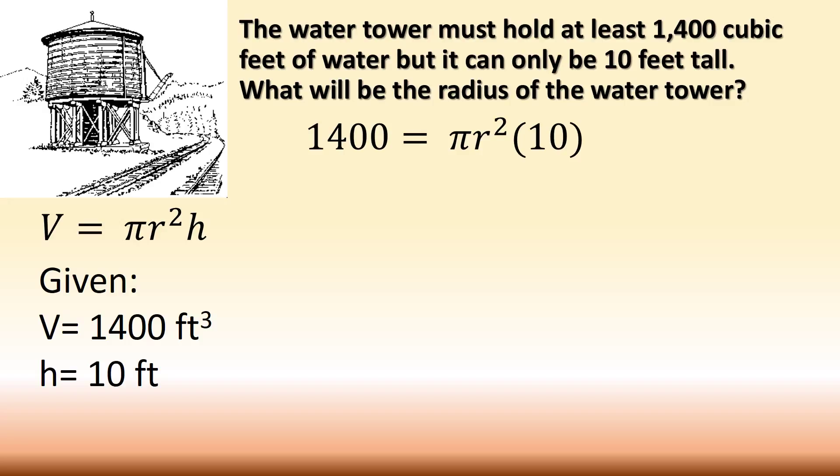Now, I want radius. It's on the right-hand side. It's being squared, and also it's being multiplied by 10 and pi. So the first thing I want to do is divide both sides by 10 and pi. Notice when we do that, cancel out my pis, cancel out my tens.